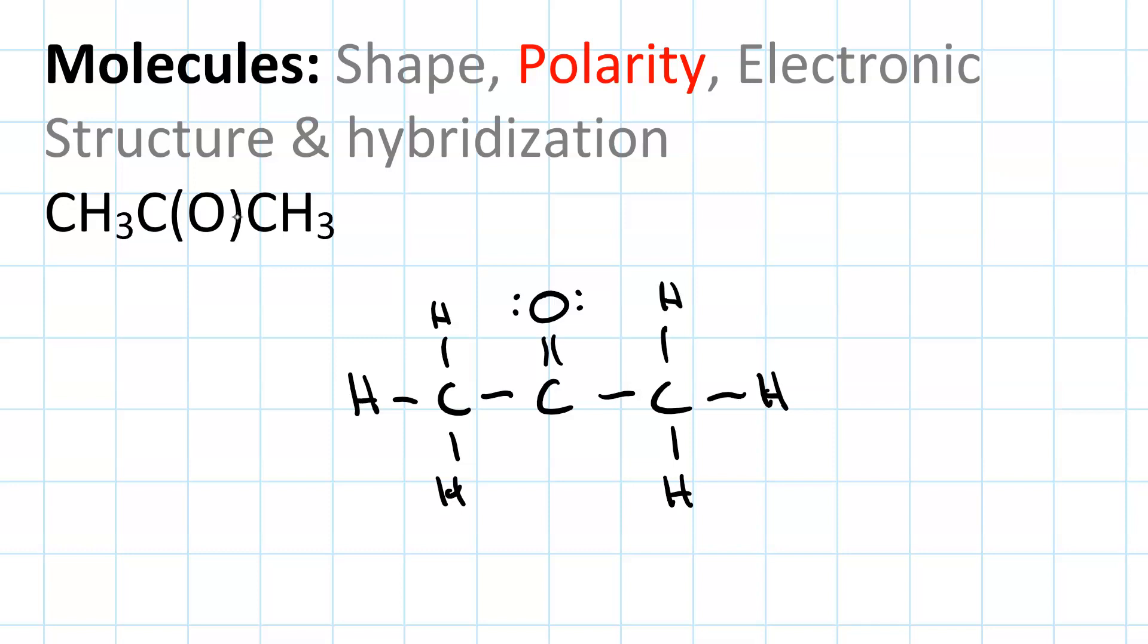So let's look at steric numbers. The carbon on the left has one, two, three, four electron groups, so its steric number equals four. That means it is tetrahedral. Same is true for the carbon on the right.